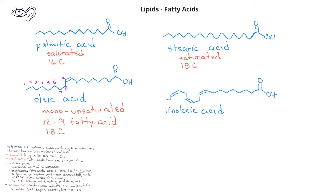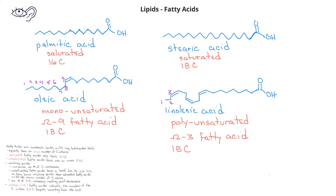Linolenic acid is a polyunsaturated fatty acid, and it's also an omega-3 fatty acid. Like stearic acid and oleic acid, it also has 18 carbons. When we look at the series of double bonds, we see that the first double bond occurs on the third carbon from the CH3 end of the fatty acid.